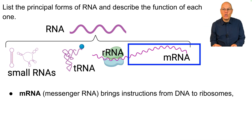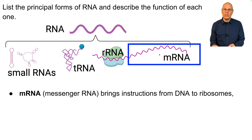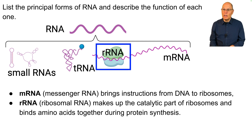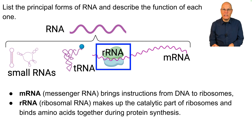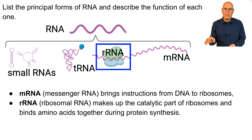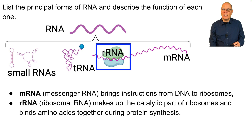mRNA, or messenger RNA, is a linear molecule that brings instructions from DNA to ribosomes. Ribosomal RNA makes up the catalytic part of ribosomes and binds amino acids together during protein synthesis. Ribosomes are particles composed of rRNA and protein — they're essentially enzymes that bind amino acids together during protein synthesis.